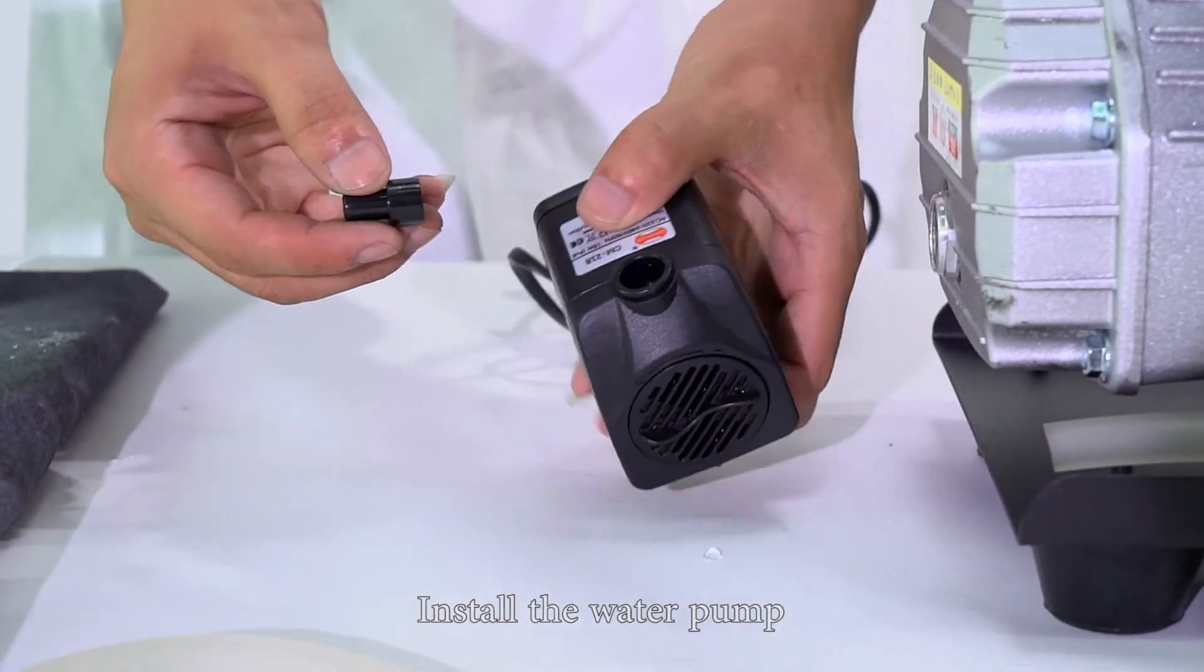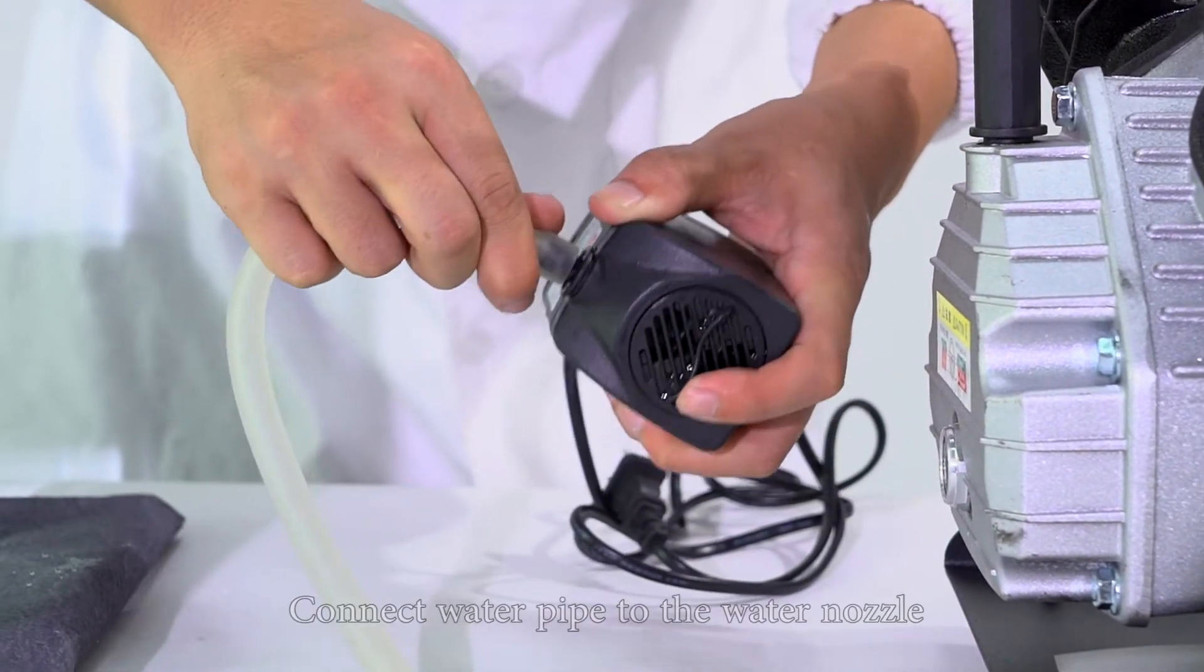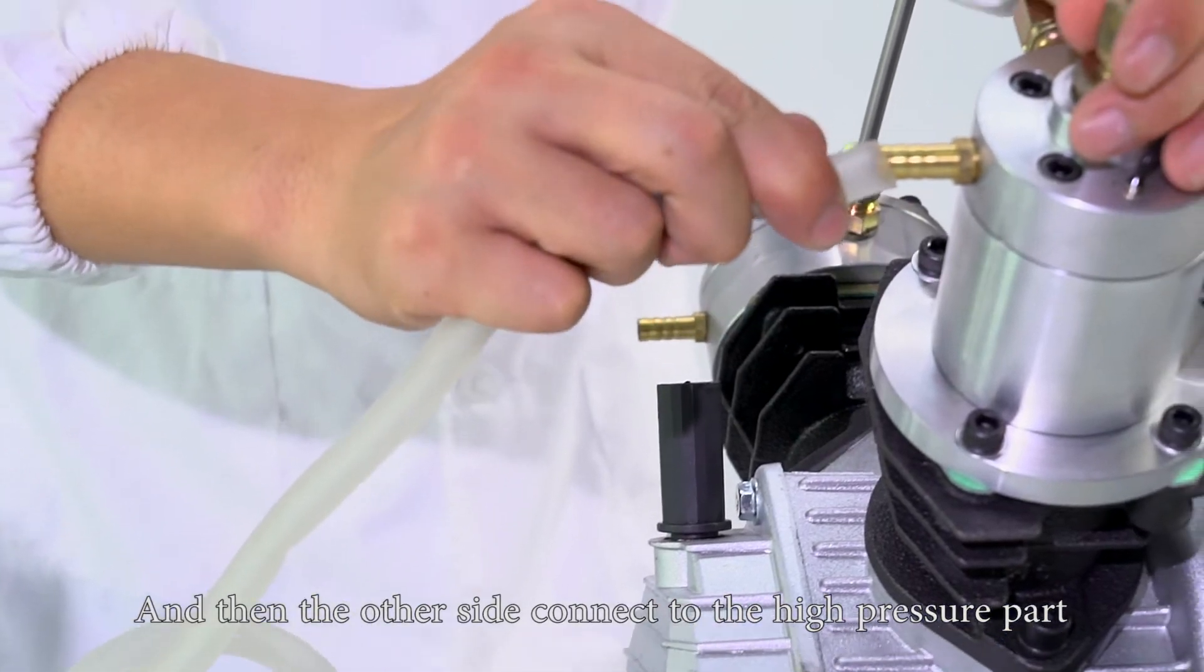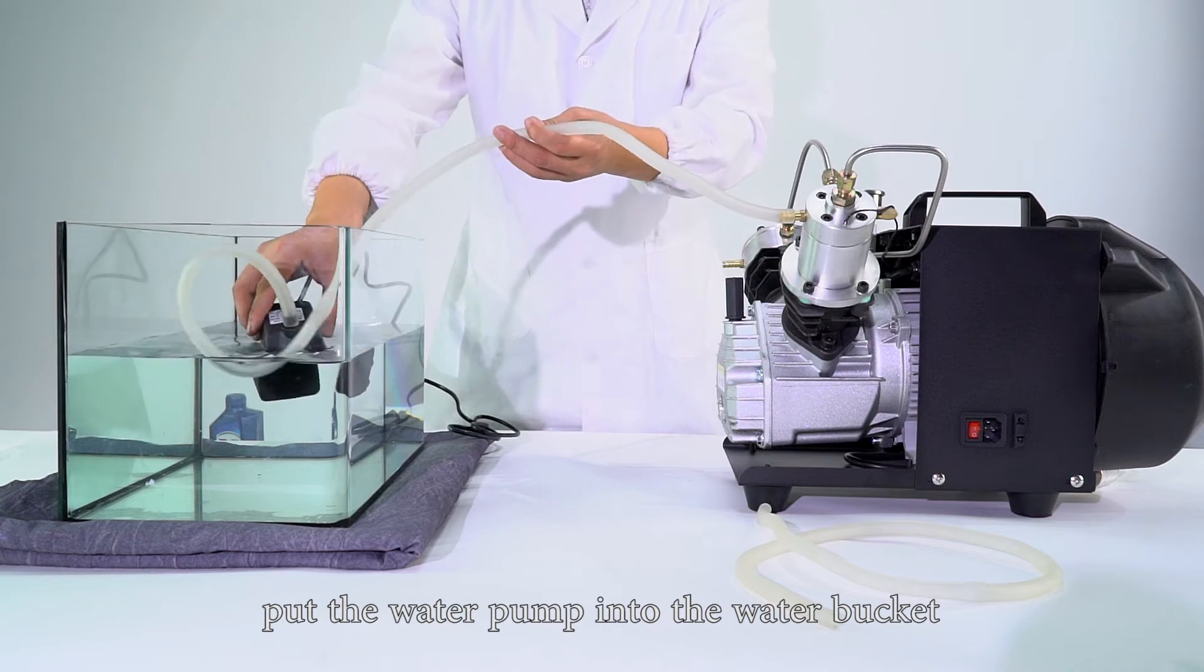Install the water pump. Connect the water nozzle to the water pump, then connect the water pipe to the water nozzle. Connect the other side to the high pressure part and put the water pump into the water bucket.